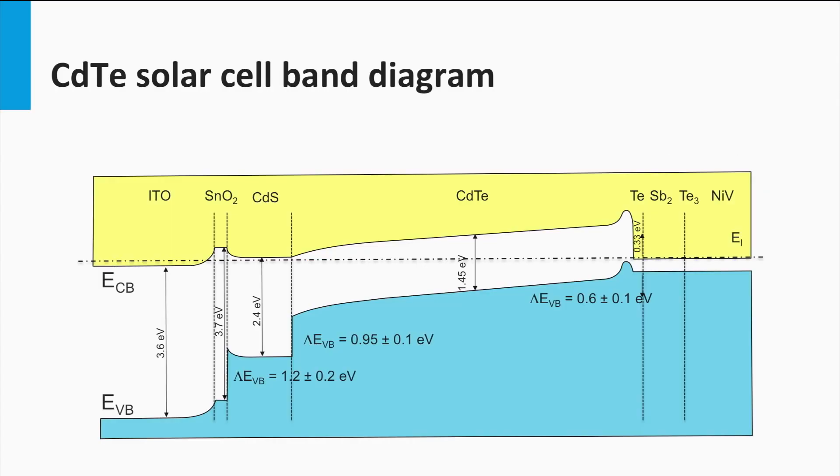Here we see the band diagram of a cadmium telluride solar cell. The P-type semiconductor cadmium telluride has a band gap of 1.45 eV, whereas the N-type cadmium sulfide has a band gap of 2.4 eV.